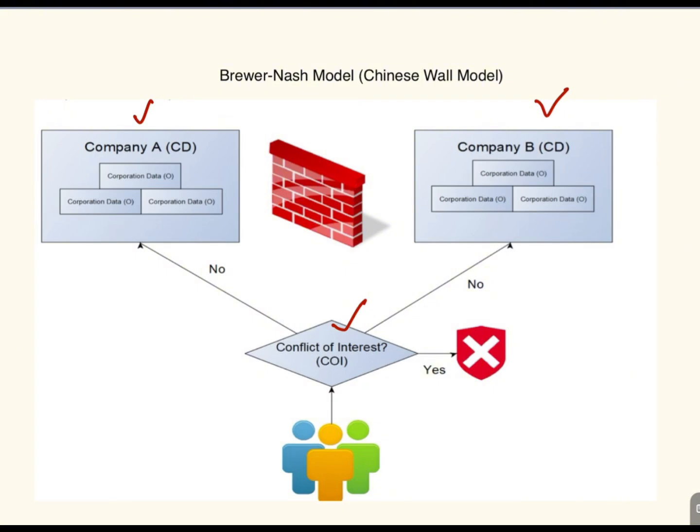A user's past actions affect their future access permissions. This model is used in highly regulated industries to ensure that financial analysts, consultants, and auditors do not misuse confidential information. It protects corporate secrecy and prevents insider trading.